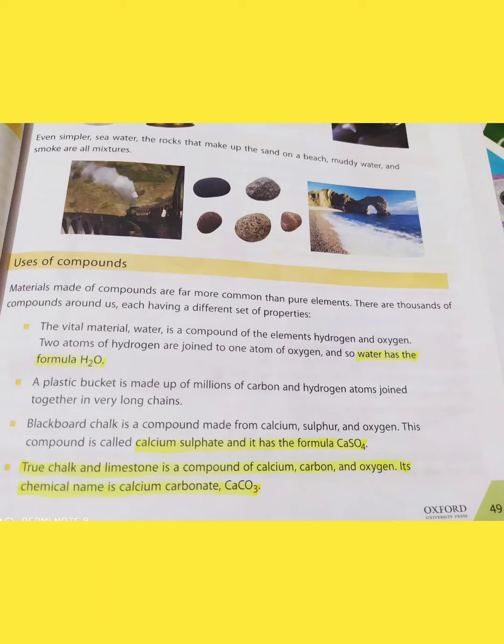A plastic bucket is made up of millions of carbon and hydrogen atoms joined together in very long chains. The third use: blackboard chalk is a compound made from calcium, sulfur, and oxygen — called calcium sulfate, with the formula CaSO₄. Limestone is a compound of calcium, carbon, and oxygen — its chemical name is calcium carbonate, CaCO₃.